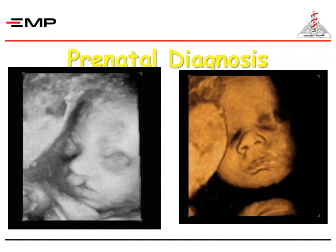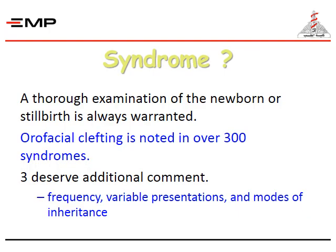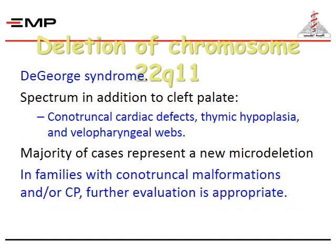Here is a prenatal diagnosis by ultrasound showing a cleft lip. Whether syndromic or not, a thorough examination of the newborn or stillbirth is always warranted. Orofacial clefting is noted in over 300 syndromes. Deletion of chromosome 22, known as DiGeorge syndrome, presents with cleft palate, conotruncal cardiac defects, thymic hypoplasia, and velopharyngeal webs. The majority of cases represent a new microdeletion. In families with conotruncal malformations and/or cleft palate, further evaluation is appropriate.